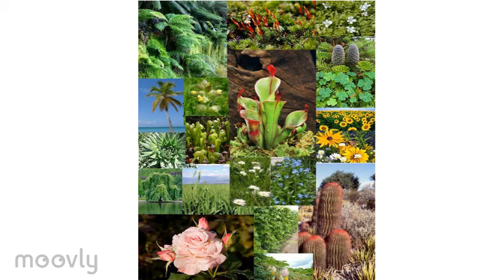We'll start with the roots and then move on to the stem of the plant. After we are done with there, we will continue on to the leaves, followed by the flowers. To wrap up the lesson, we'll talk about the seeds.